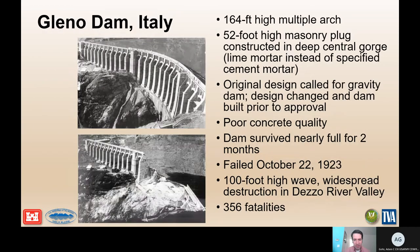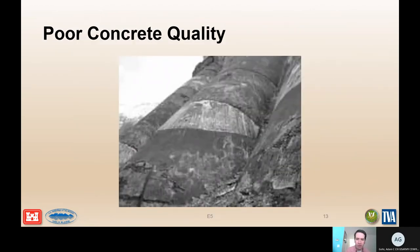The second case history is the Gleno dam, a 160-foot-high multiple arch dam constructed with a 52-foot-tall masonry plug in a deep gorge. It was originally designed as a gravity dam but was modified during construction to be a multiple arch buttress dam. It failed in October 1923 after having been loaded for two months, resulting in 356 fatalities. One contributing factor was poor quality concrete — you can clearly see differences in the concrete placed within different lifts of the buttress.